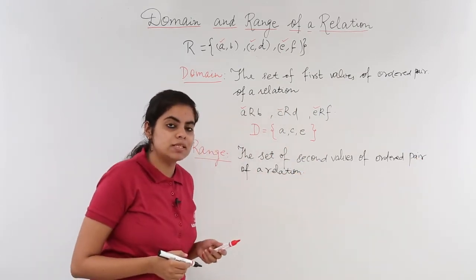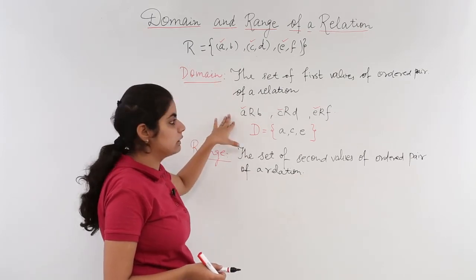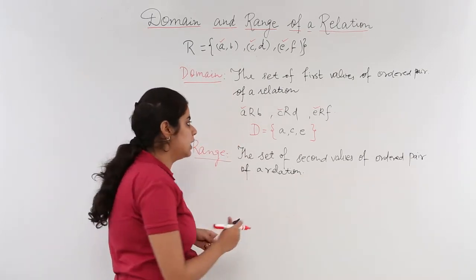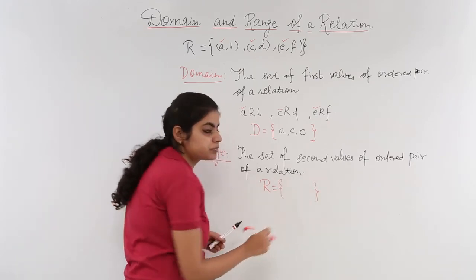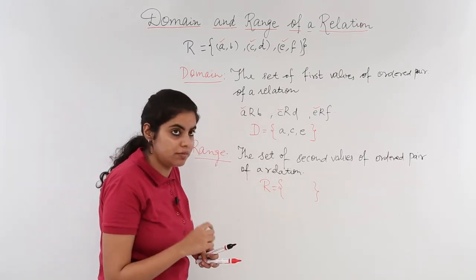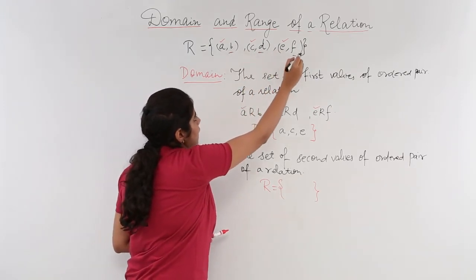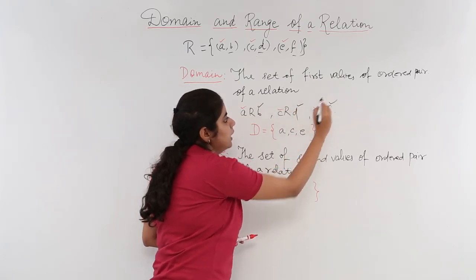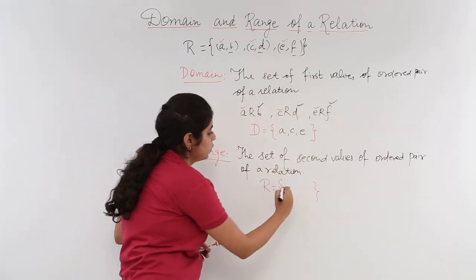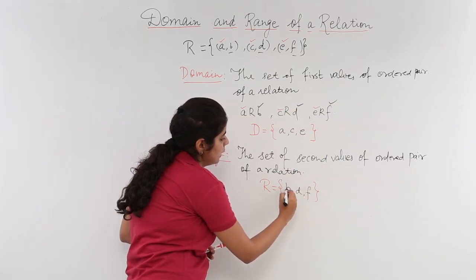Now for the same example which we took up earlier, this relation and this representation, let's write R which is the range. The range is the set of second values. What are the second values? They are b, d and f. And here also there are b, d and f. So the answer would be b, d and f.